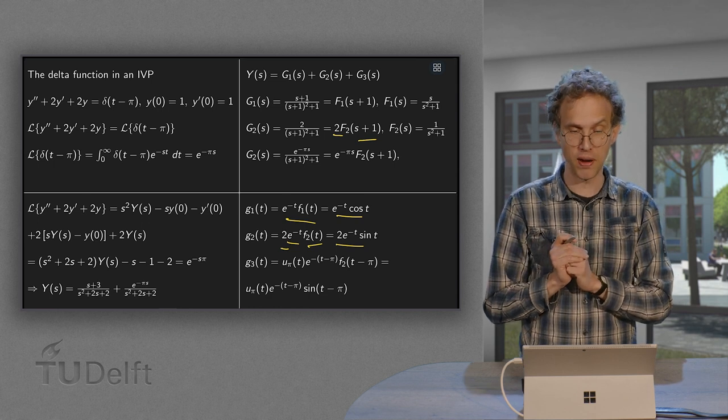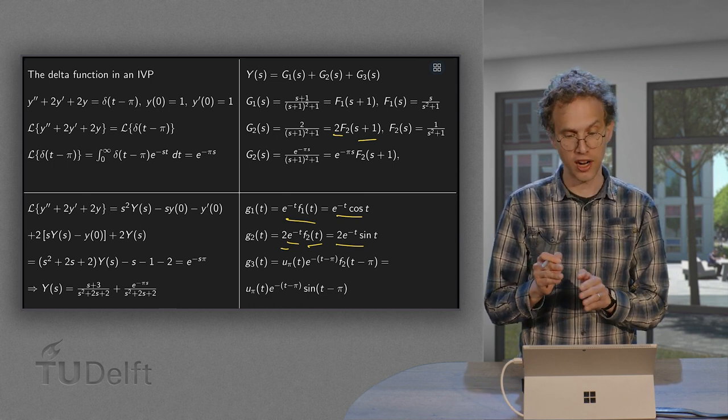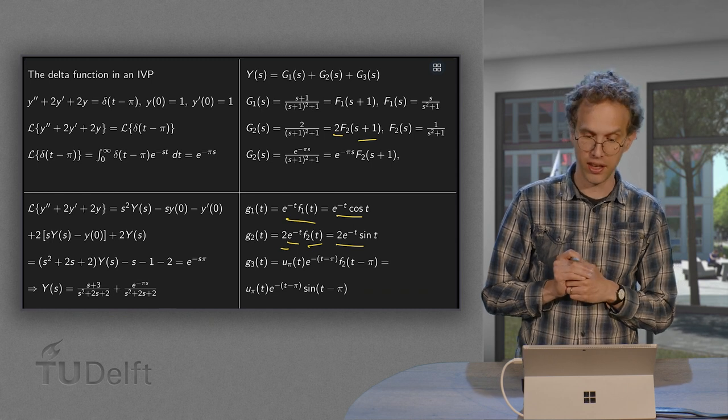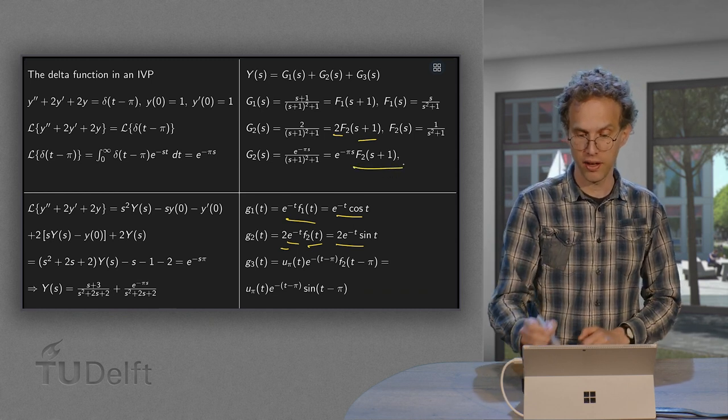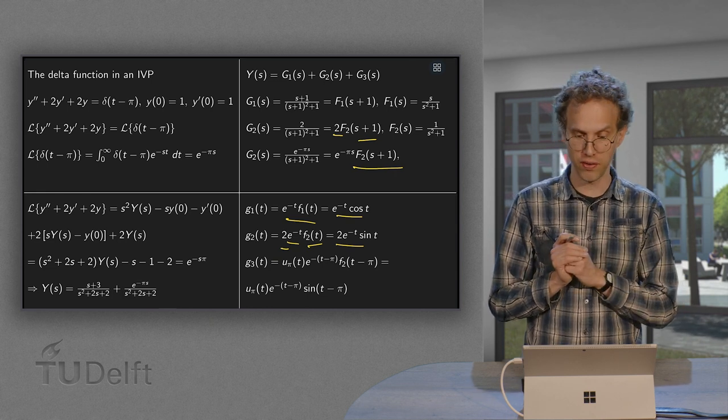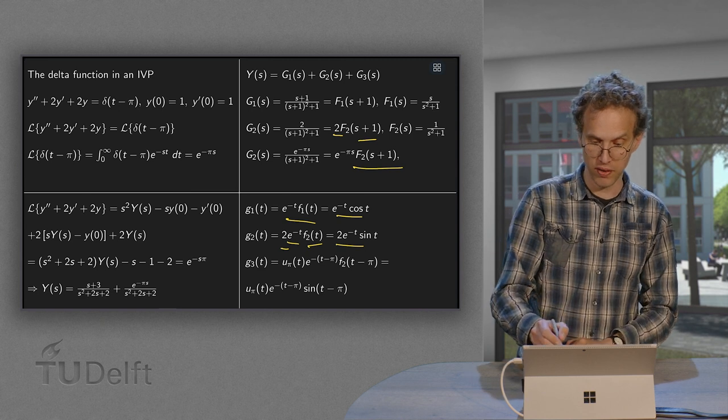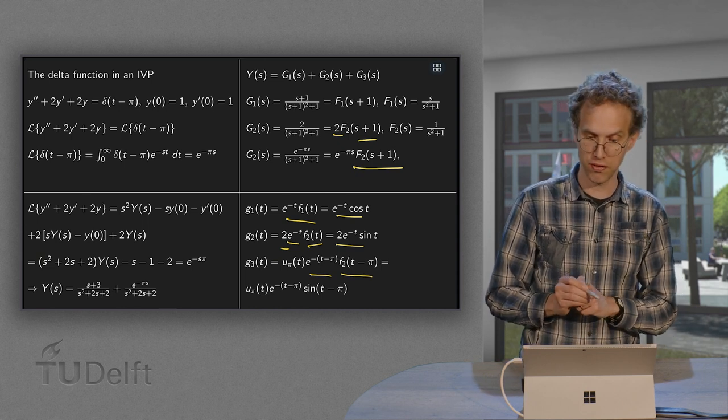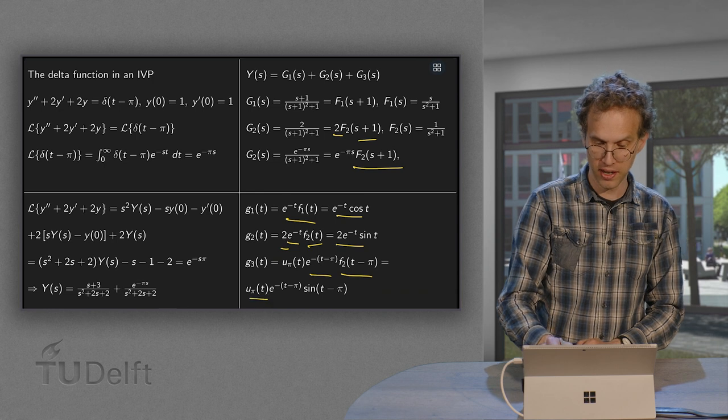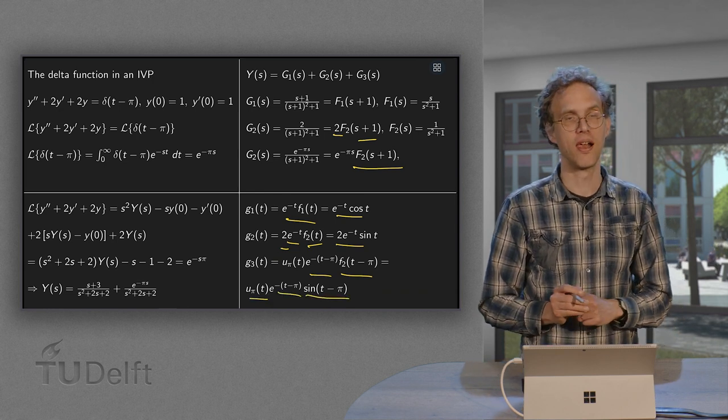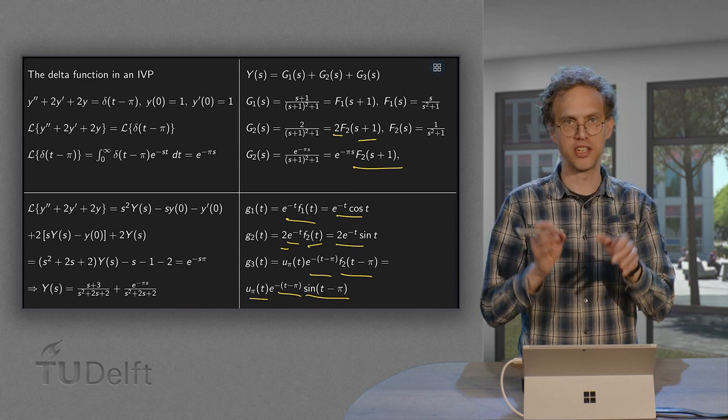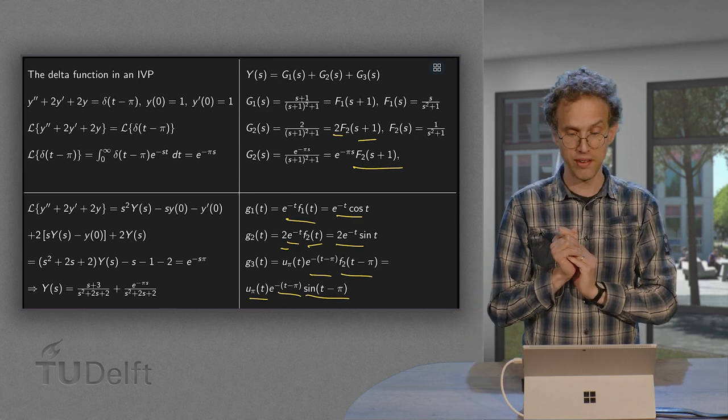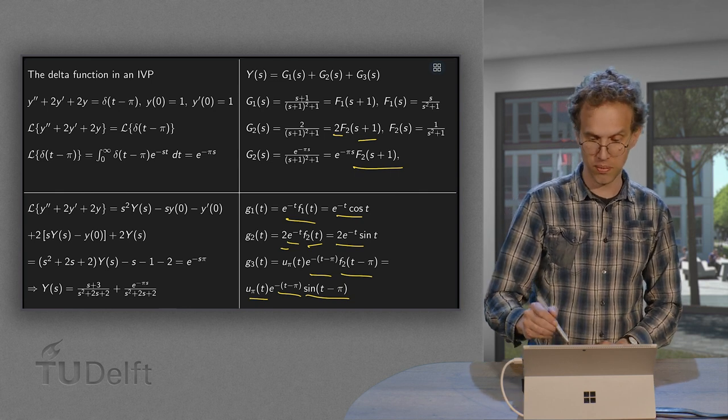And for the other one, you have this e to the power minus pi s, which means that we have to start later. We have u pi of t and replace t by t minus pi in our inverted function. And if we invert capital F2, we have seen what we got. We get e to the power minus t times sine t. So we have e to the power minus t minus pi and we have to plug in t minus pi on the place of the sine. So you get u pi, e to the power minus t minus pi and a sine of t minus pi. And of course, if you want, you can simplify sin t minus pi. But you can also leave it as it is. And the back transform is the sum of G1, G2 and G3.